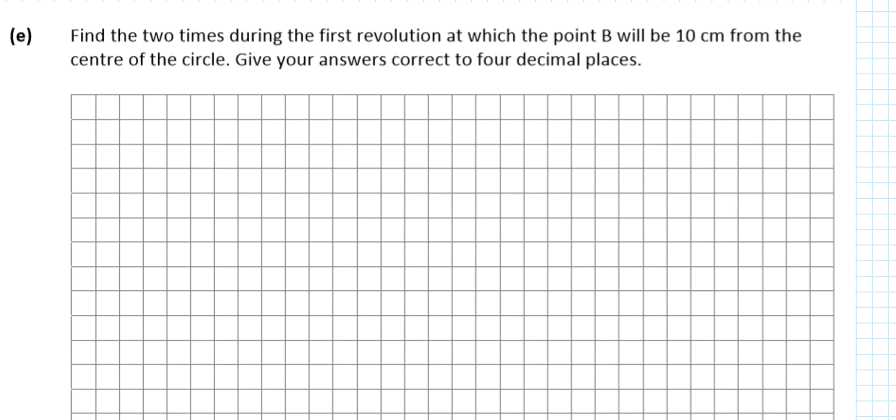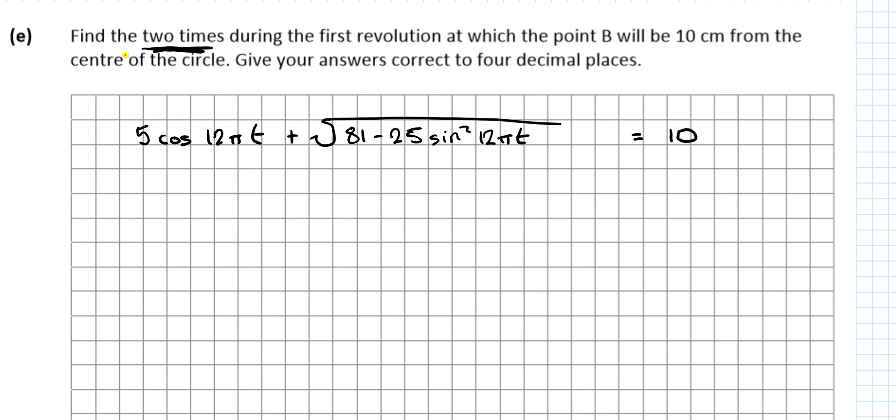Find the two times during the first revolution at which point B will be 10 centimeters from the center of the circle. We said point B was 5cos(12πt) plus the square root 81 minus 25 sine squared 12πt. We want to find when that equals 10. Important to note it's times, two times, so it should be two answers. I've got sines and cosines. I don't particularly like having sines and cosines - I'll probably end up with a tan somewhere. And I have a square root, so the first thing I'd be thinking is to try and get rid of the square root.